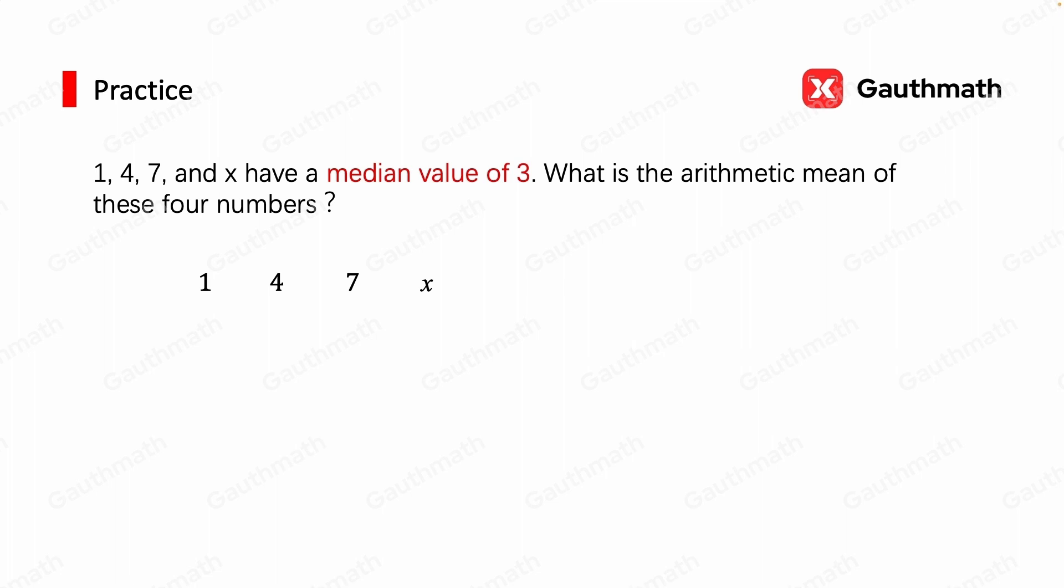Well, given that the median is 3, if x is greater than 7, then the median would be the average of 4 and 7, which is not 3. Therefore, the only way we can achieve a median of 3 is that x is less than 4 and the median is the average of x and 4.